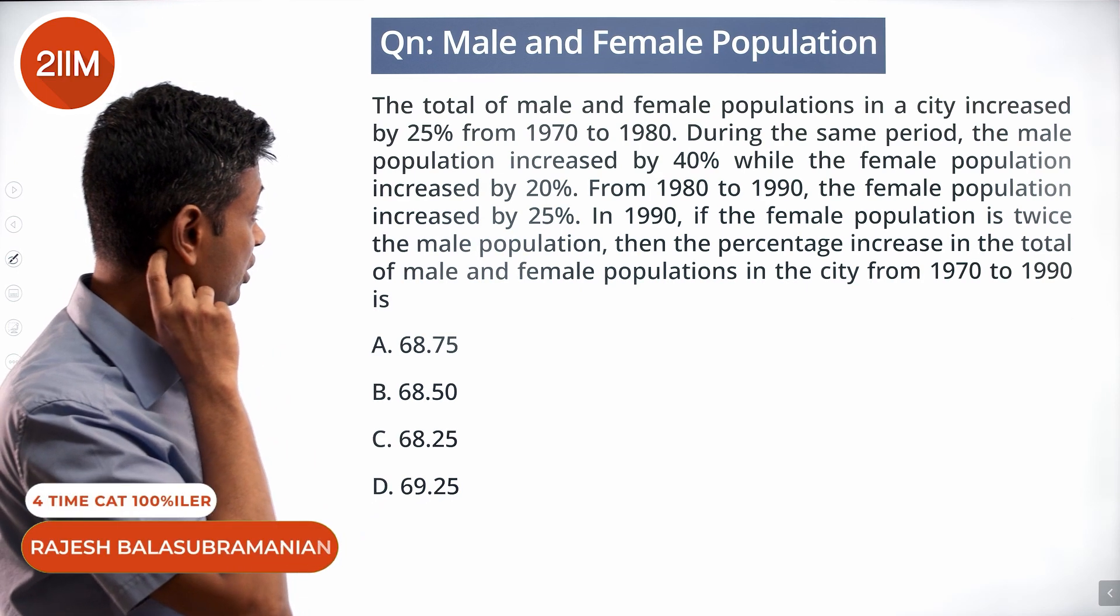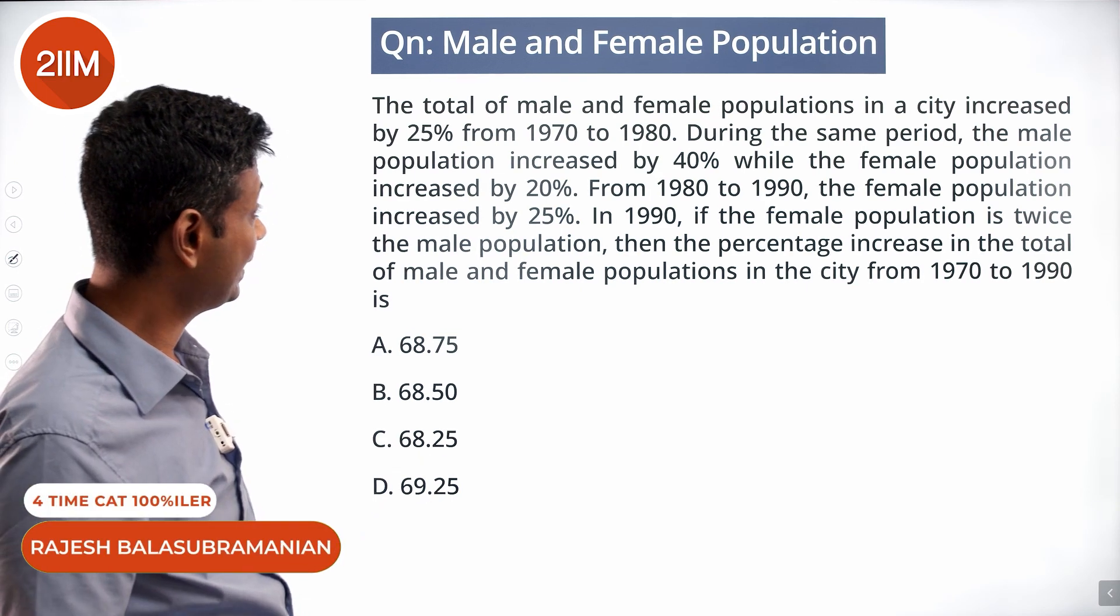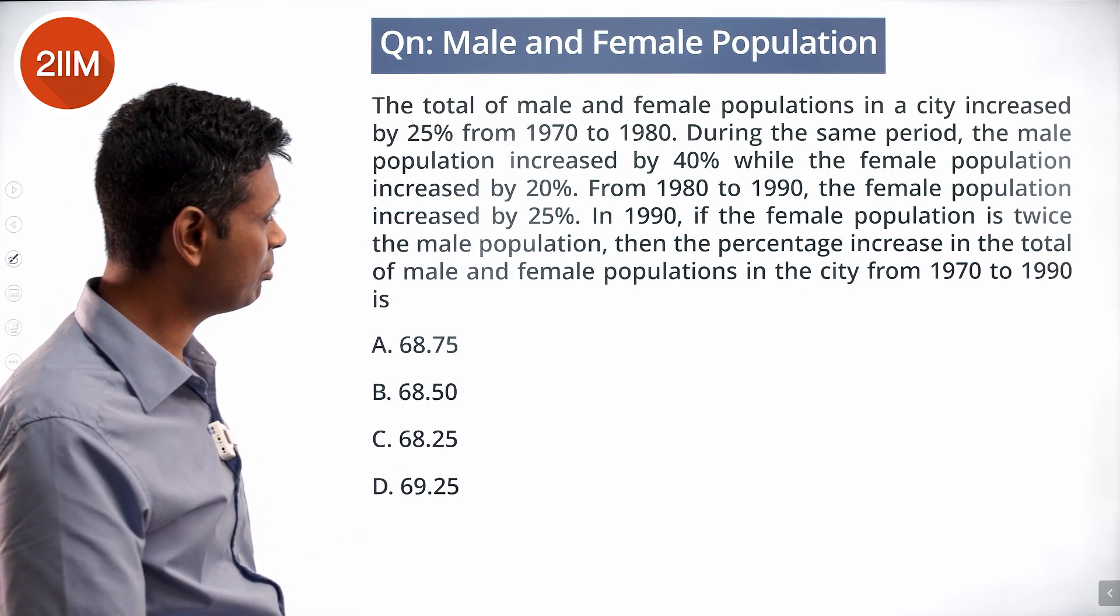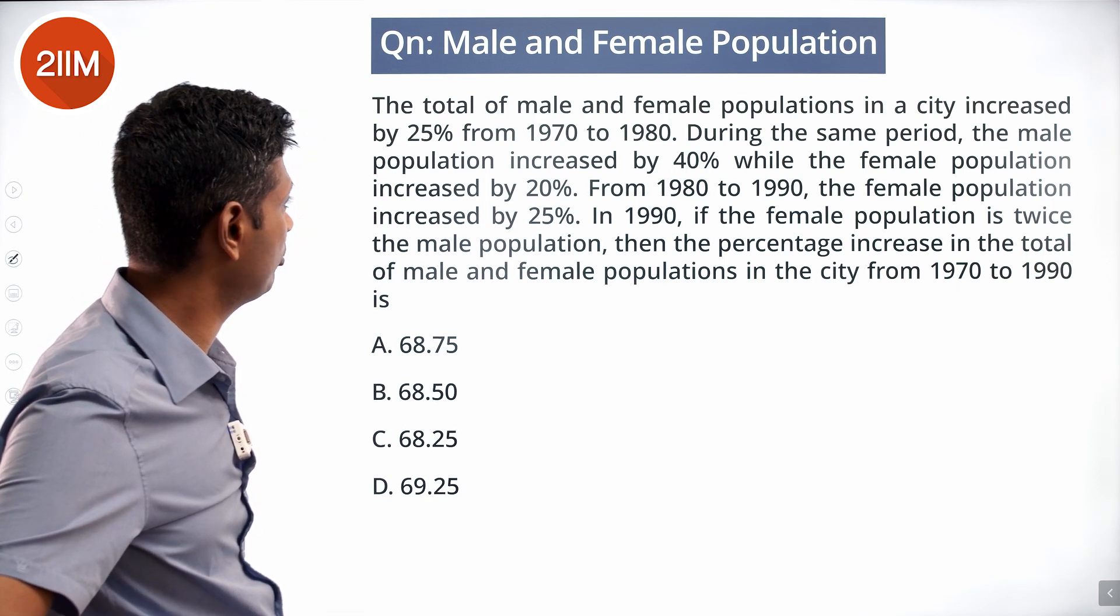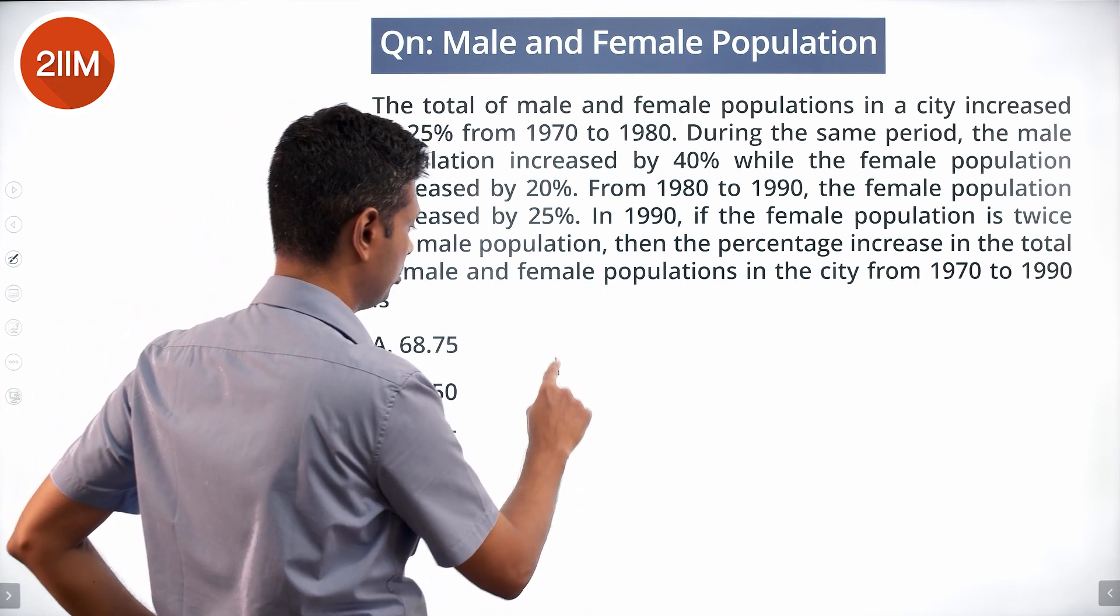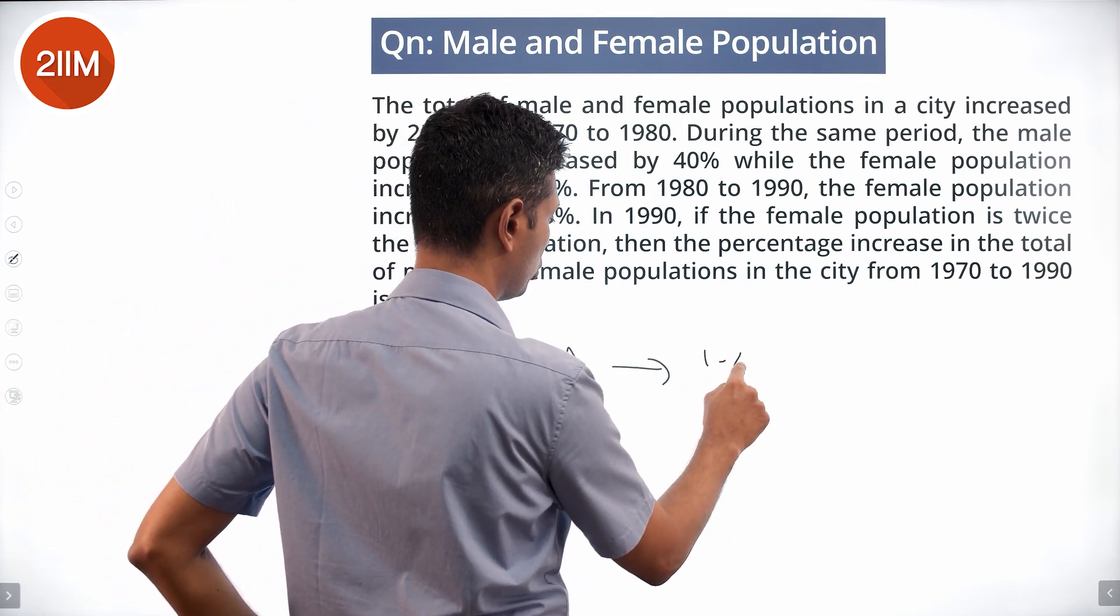The total of male and female populations in a city increased by 25% from 1970 to 1980. During the same period, the male population increased by 40% while the female population increased by 20%. So male went to 1.4M.